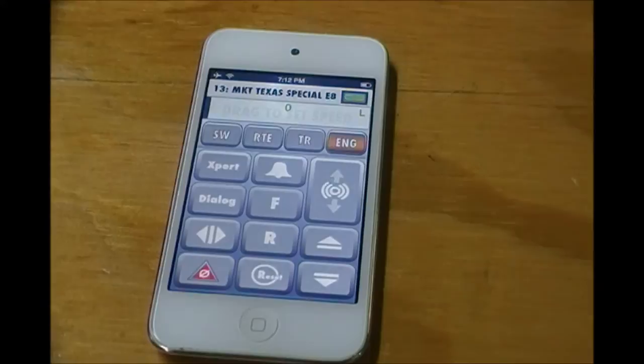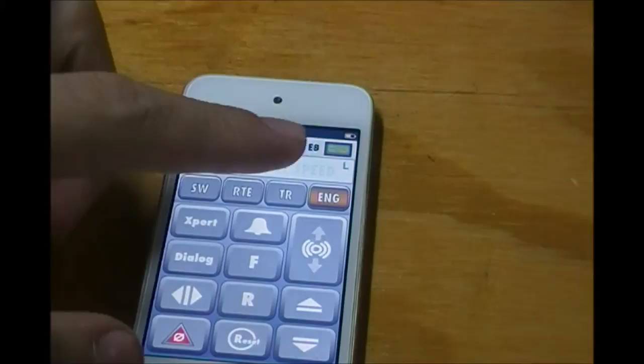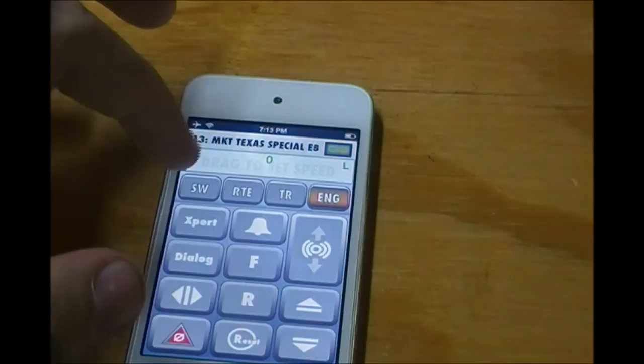Once connected the first thing you'll see is you'll see a little green link icon right at the top. That's telling you that you're connected to the Wi-Fi module. And then we have all these buttons here. We have the speed graph, the engine, the train, the routes and the switch buttons for control.